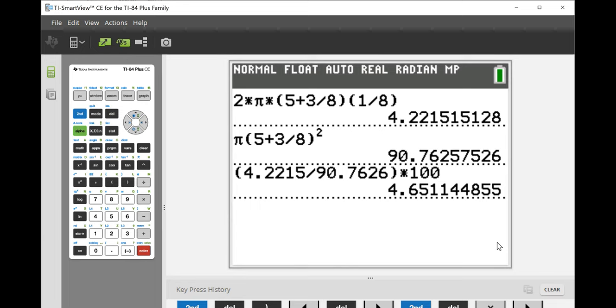Up to a point, we've just kicked the can down the road a little. It has to be admitted. Because now the question then becomes, well, is 4.65% a big error or a small error? And just as with the number itself, there's no really clear answer to that. It depends on the problem.